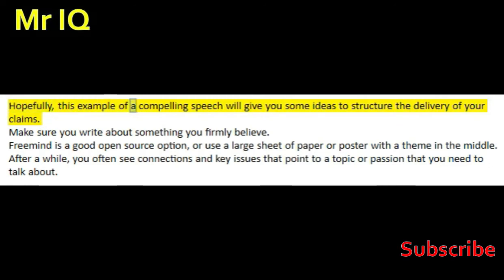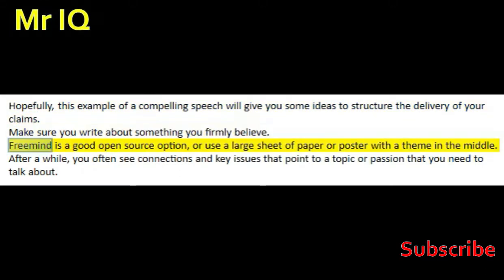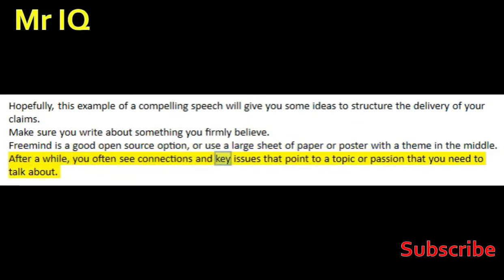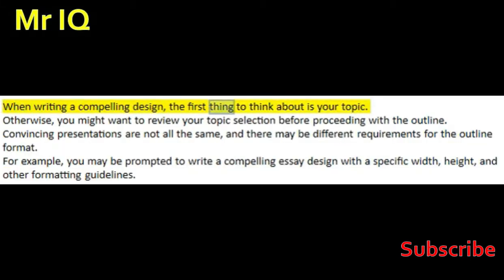Hopefully, this example of a compelling speech will give you some ideas to structure the delivery of your claims. Make sure you write about something you firmly believe. FreeMind is a good open-source option, or use a large sheet of paper or poster with a theme in the middle. After a while, you often see connections and key issues that point to a topic or passion that you need to talk about. When writing a compelling design, the first thing to think about is your topic. Otherwise, you might want to review your topic selection before proceeding with the outline.